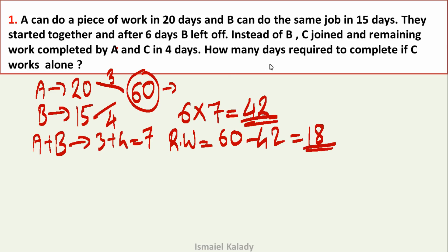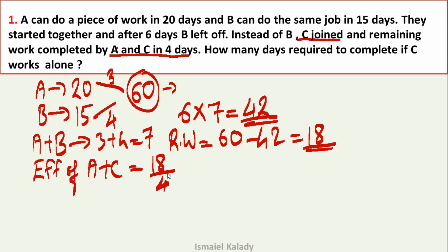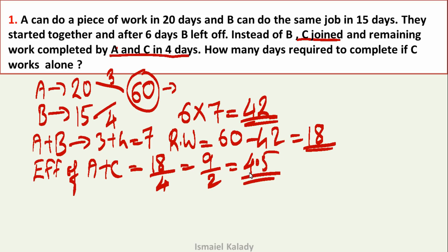This 18 units of remaining work is done by A and C together. A plus C efficiency equals 18 divided by 4, which gives 4.5. C's efficiency equals A plus C efficiency minus A's efficiency: 4.5 minus 3 equals 1.5.